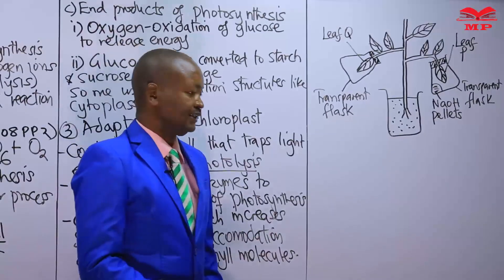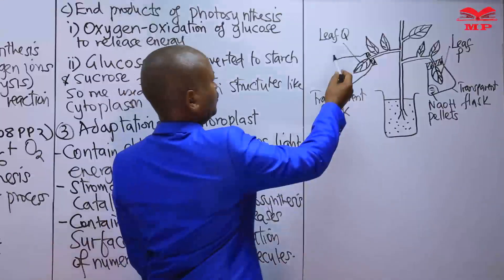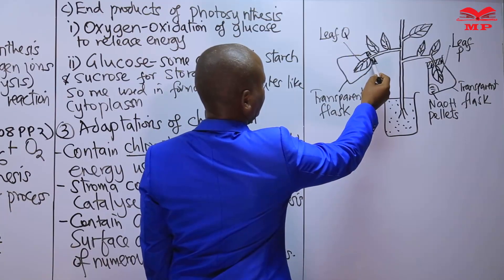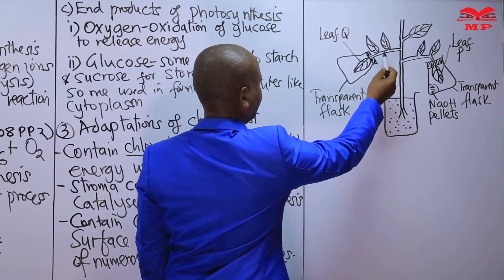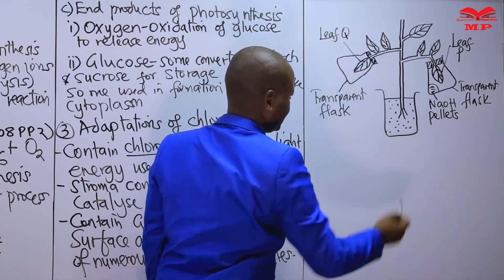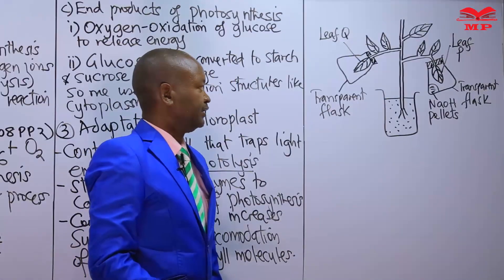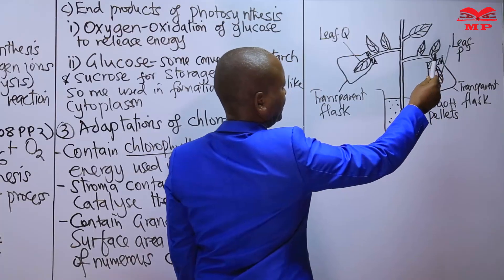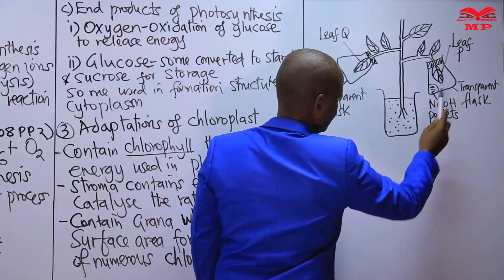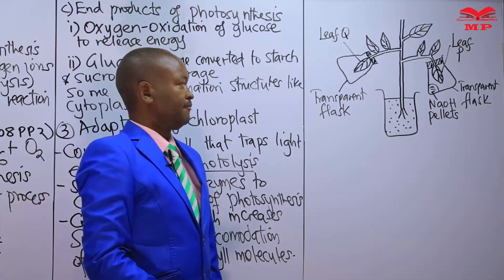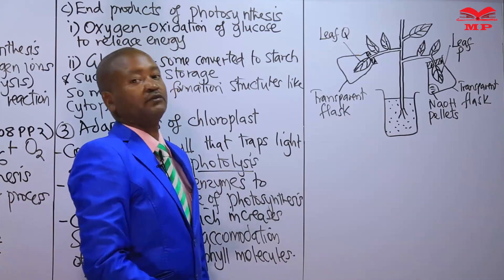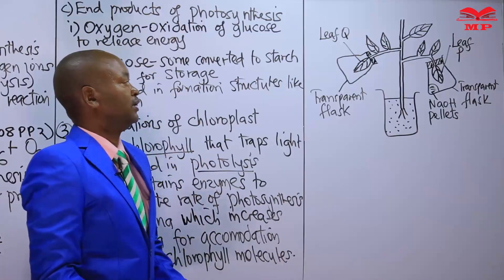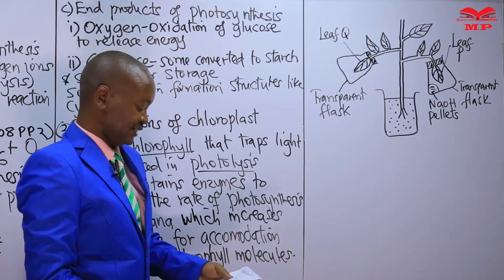But before we do that, let us study the diagram. Here we have a leaf. These sealed parts do not allow anything — any gas to enter or any gas to leave — that is either carbon dioxide or oxygen. The same thing applies here; they are also sealed. Then we are seeing sodium hydroxide pellets.